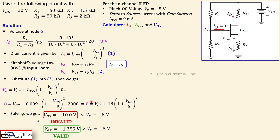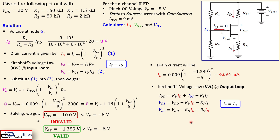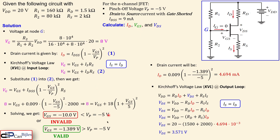Using the valid VGS of minus 1.389 V in equation one, we calculate the drain current: ID = 4.694 mA, approximately 4.7 mA. Now applying KVL at the output: VDD = RD × ID + VDS + RS × IS. Since IS = ID, we solve for VDS: VDS = 20 − (1500 + 2000) × 4.694 mA, which gives VDS = 3.571 volts. We now have all three quantities: ID, VGS, and VDS.